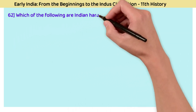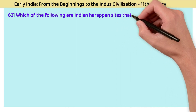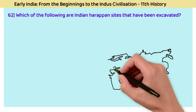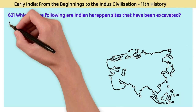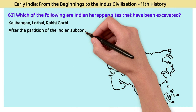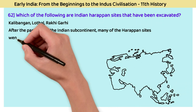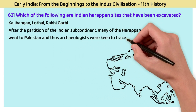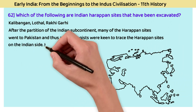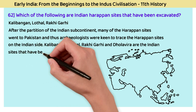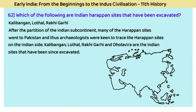Question 62: Which Indian Harappan sites have been excavated? The answer is Kalibangan, Lothal, and Rakhigarhi. After the partition of the Indian subcontinent, many Harappan sites went to Pakistan. Archaeologists working to trace Indian Harappan sites identified Kalibangan, Lothal, Rakhigarhi, and Dholavira as some of the Indian sites that have been excavated.